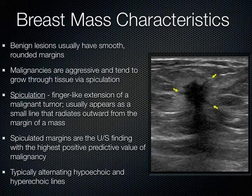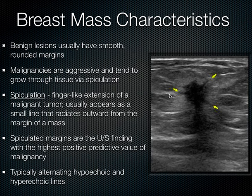The various characteristics that help us differentiate benign from malignant lesions include the margins. A benign lesion has a nice, smooth, rounded margin, whereas malignancies tend to grow through tissue layers through spiculation — finger-like extensions of the malignant tumor. These spicules look like small lines going outward from the mass. Spiculated margins actually have the highest predictive value for a malignant tumor. Sometimes you'll see alternating layers of hyperechoic material with these hypoechoic spiculating lines.